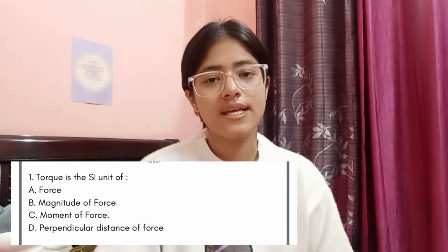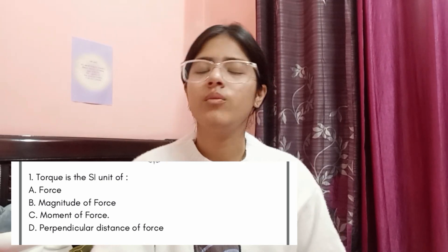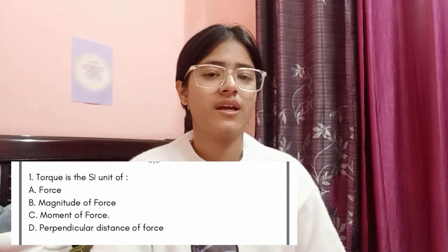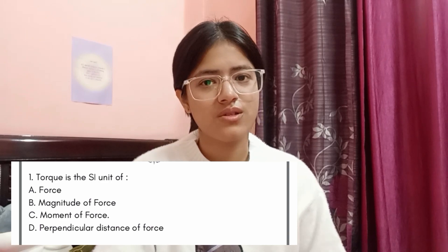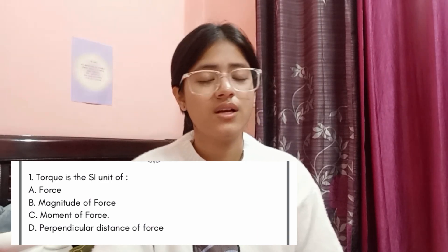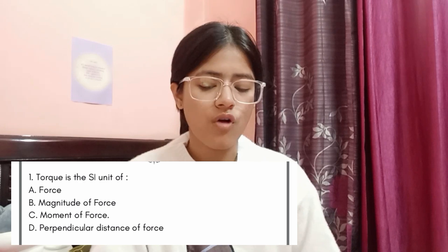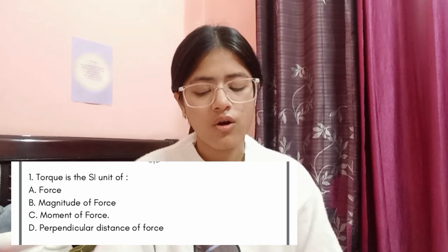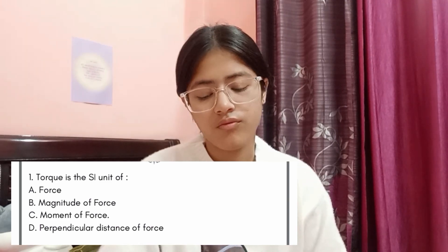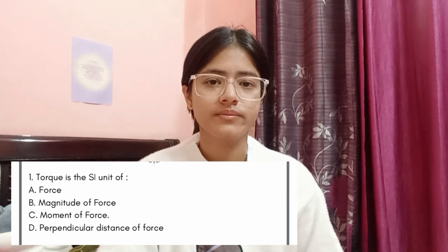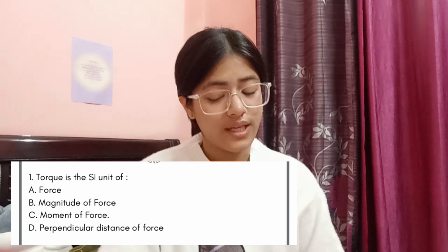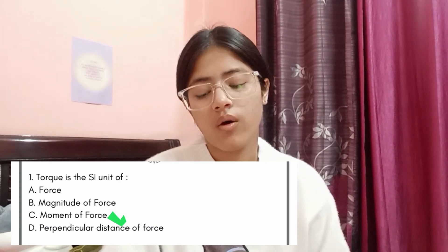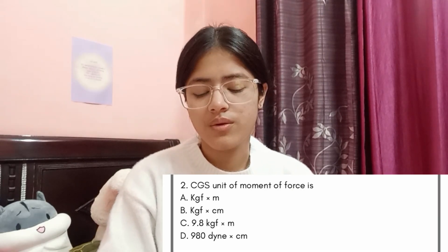The first question is: torque is the SI unit of — you might think this is a very simple question, but these questions also come in the MCQ part. Option A: force, Option B: magnitude of force, Option C: moment of force, Option D: perpendicular distance of force. The correct answer is Option C, moment of force.